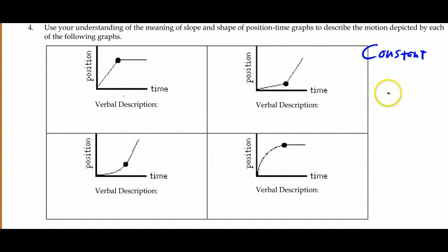Essentially I have three possibilities. I have a constant position, meaning I'm in the same place all the time, which would be rest. I could have a constant velocity, and that would mean I'm covering equal intervals of ground for each equal time period that I'm moving.